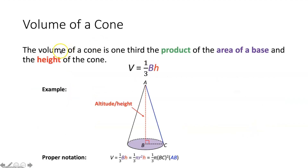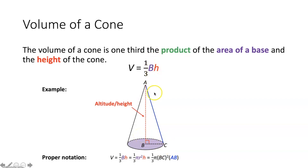Now let's talk about the volume of a cone. The volume of a cone is one-third the product of the area of the base and the height: V equals one-third B times H. Since a cone has a circular base, you can replace B with πr². This is the only difference from the pyramid formula. You can memorize this as one formula for both cones and pyramids.